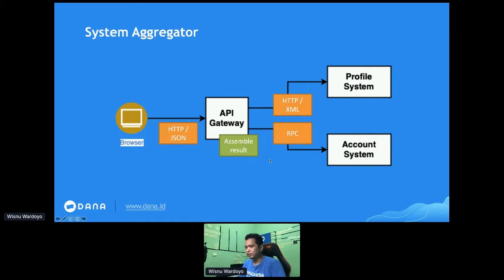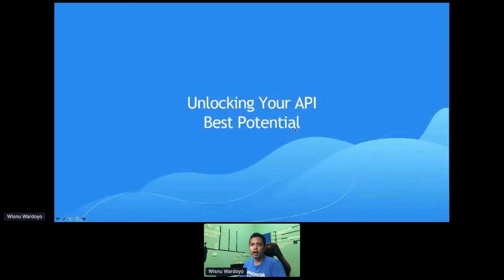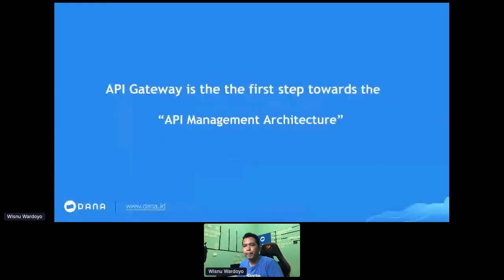There are several things you can solve with an API Gateway: starting from authorization, rate limiting, throttling, service prioritization, and system aggregator. The next topic is how to unlock your API's best potential. Implementing an API Gateway means you are one step closer to an API management architecture. So, what is API management?